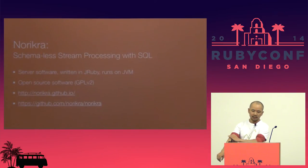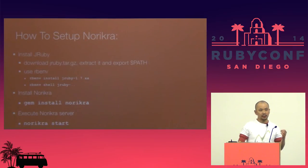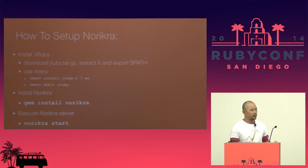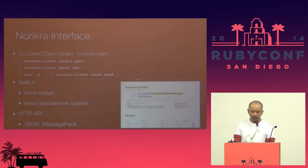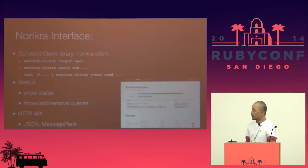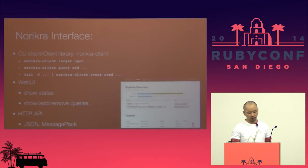Norikra is a stream processing middleware with SQL. It is an open source server software built with JRuby on the JVM. Norikra is distributed via rubygems.org, so we can install it with just 'gem install norikra', then launch the server. Norikra has some interfaces like a CLI client, client libraries, and we can operate Norikra with CLI commands.